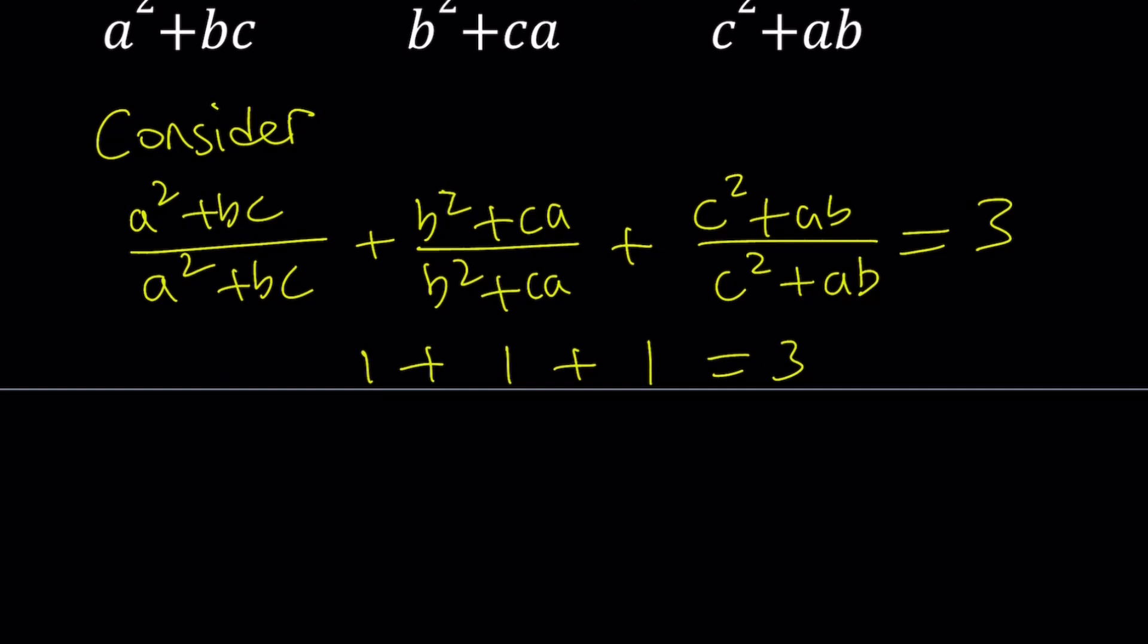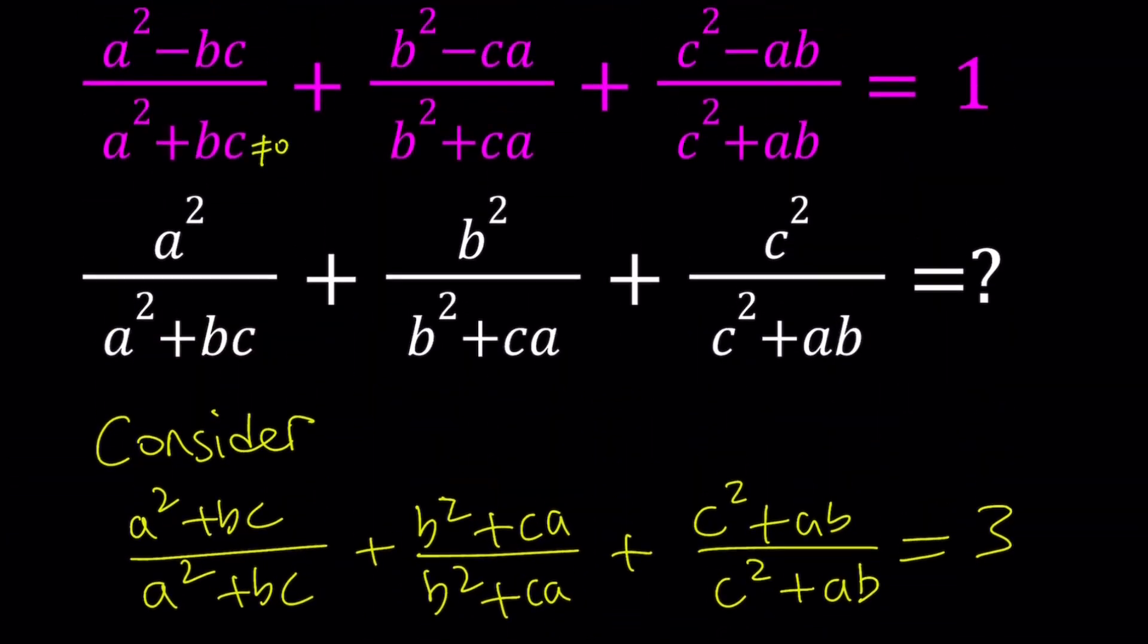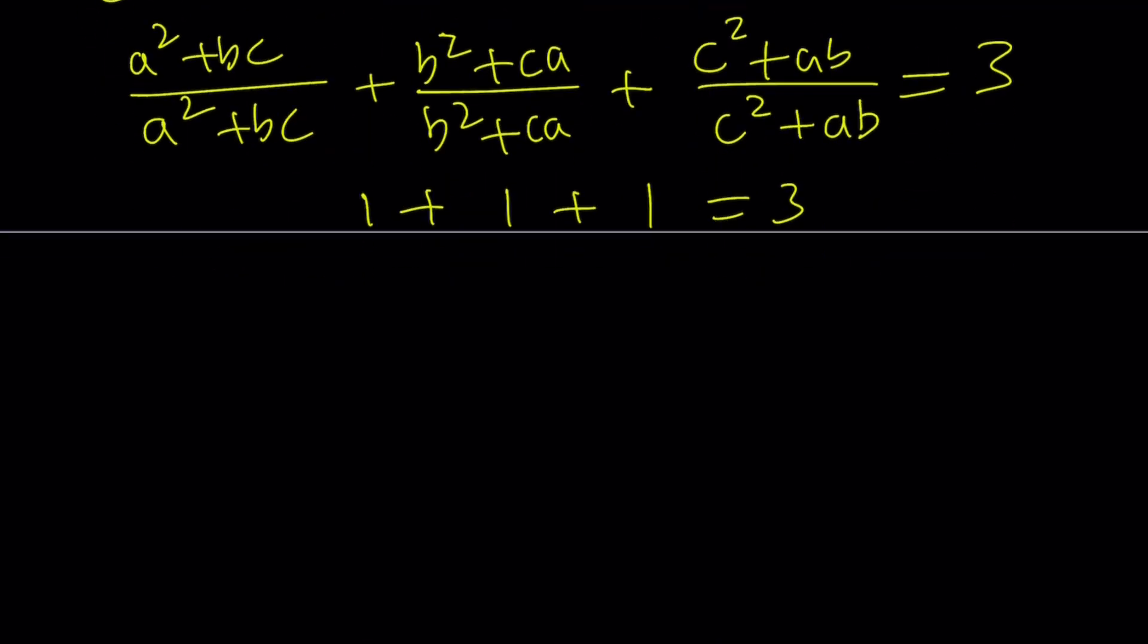But how is that helpful? Well, here's the thing. I'm going to take that expression that is equal to 3. And I'll take the given expression, which is this. a squared minus bc over a squared plus bc, plus b squared minus ca over b squared plus ca, plus c squared minus ab over c squared plus ab. And that is given to be 1. It's given in the problem, so we're going to use it. So this is 1 and that's 3.